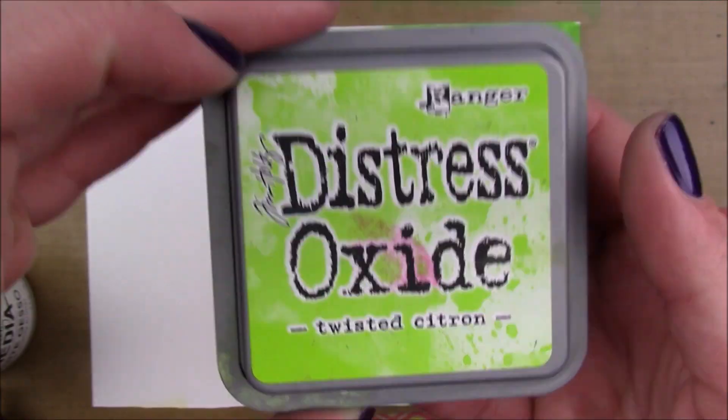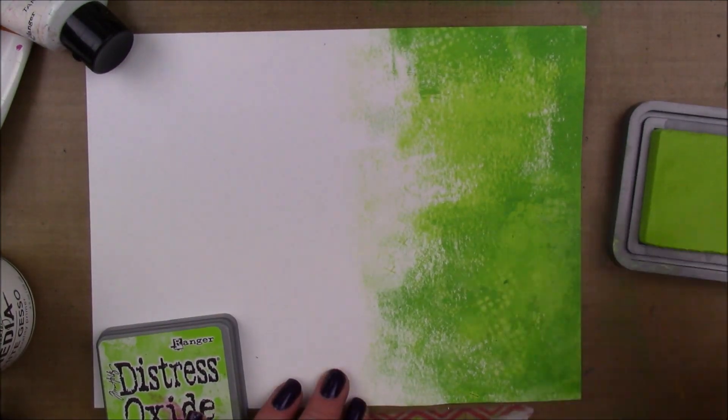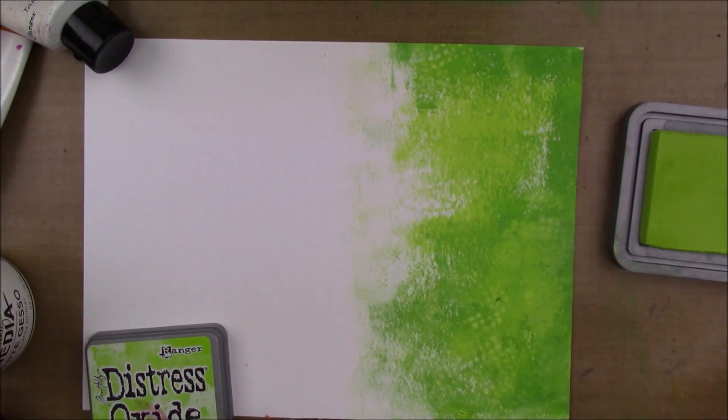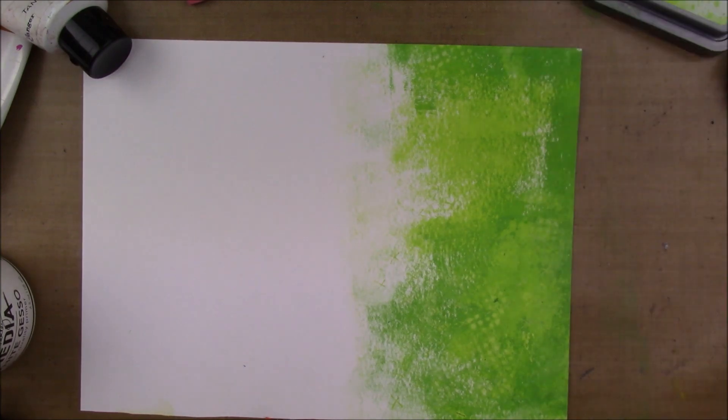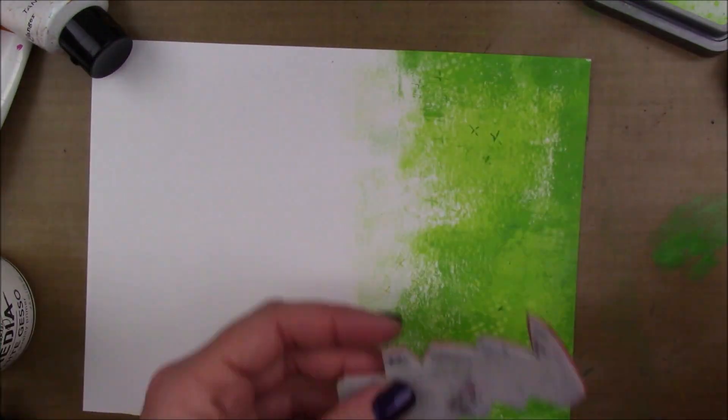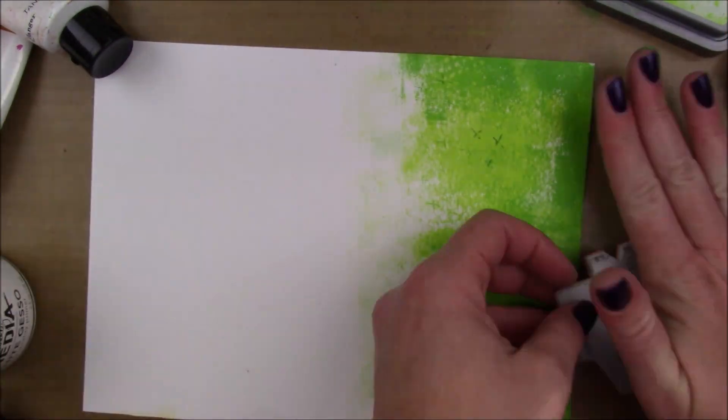But the Twisted Citron wasn't dark enough for me, so I thought I would try to stamp with some of the evergreen acrylic paint. I just put a little bit down on my craft sheet and then pressed my stamp into that and then stamped onto my paper, and I was much happier with that color.